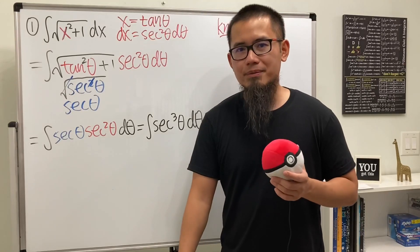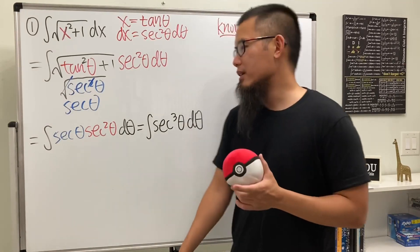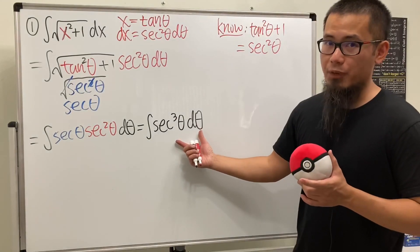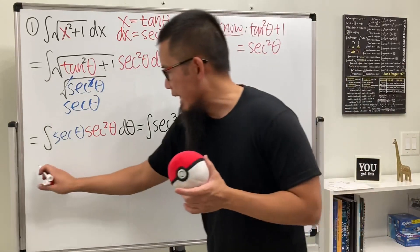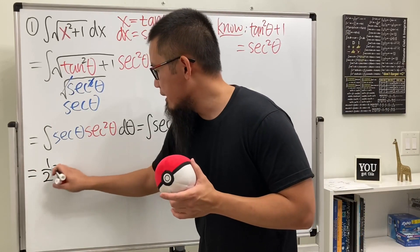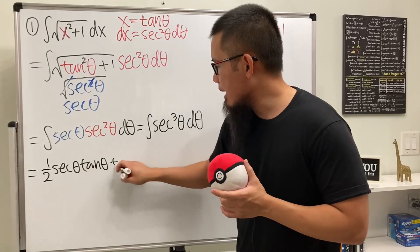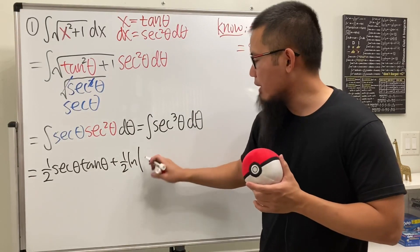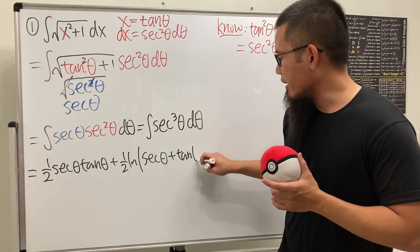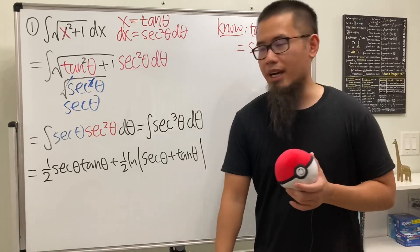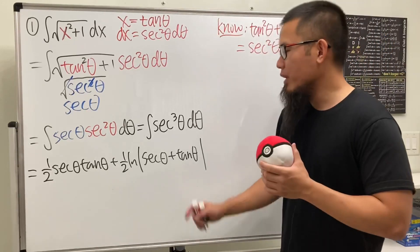We break this down and differentiate secant theta while integrating sec²θ — it's actually a repeating case. For more details you can watch my other video. Using the result from that, we get: one half secant theta times tangent theta plus one half ln|sec θ + tan θ|. It's a long result, but we're not done yet because we're still in the theta world.